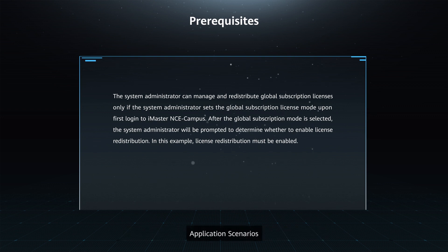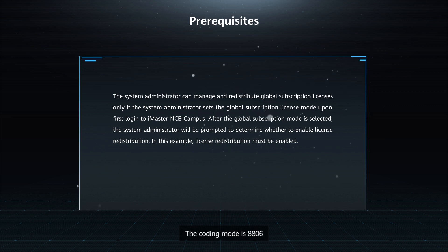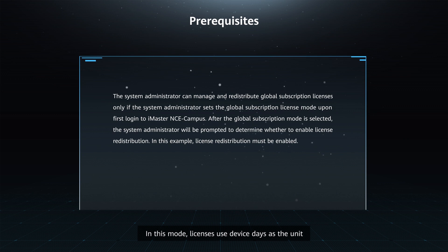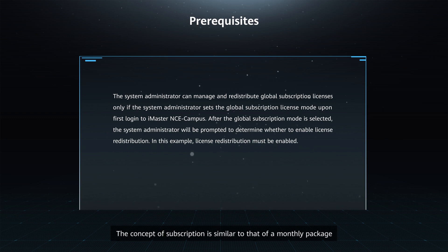Application Scenarios — Global Subscription License: The Coding Mode is 8806. Licenses are consumed by time. After a license expires, iMaster NCE Campus stops providing services. In this mode, licenses use device days as the unit.